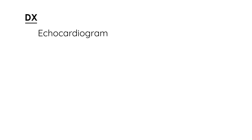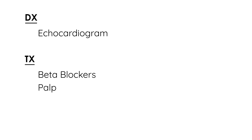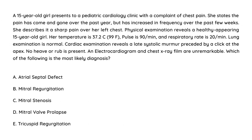Diagnosis is by echocardiogram — that's the way to diagnose mitral valve prolapse. Treatment: if asymptomatic, nothing is needed. If there are symptoms, use beta blockers. Beta blockers help with palpitations and dizziness, and can also help calm a person experiencing anxiety.